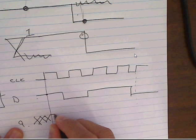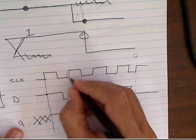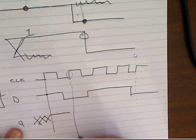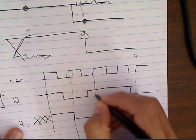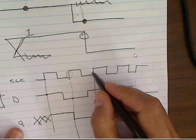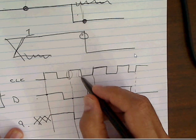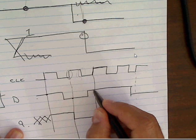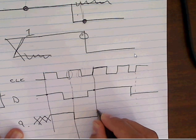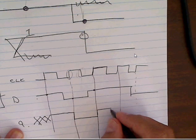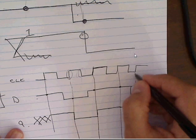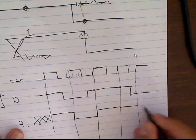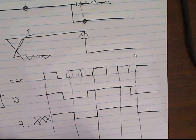Q keeps its value until another clock edge occurs, at which point D is sampled again. The falling edge is completely ignored for a positive edge triggered flip-flop. At the next rising clock edge, D is sampled — if D is high, Q goes high; if D goes low just before the edge, Q goes low. Not-Q simply reflects the inverse of Q at all times. If you understand this, you understand flip-flops.